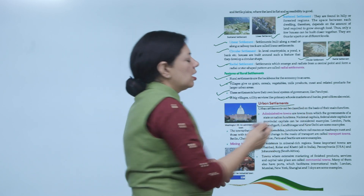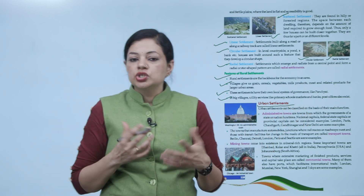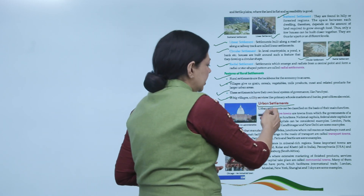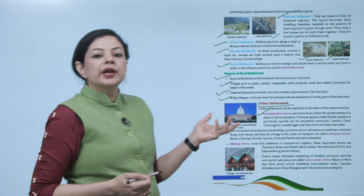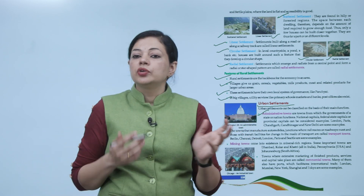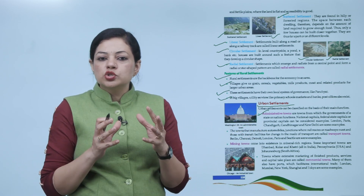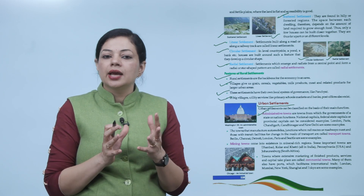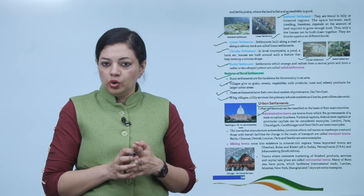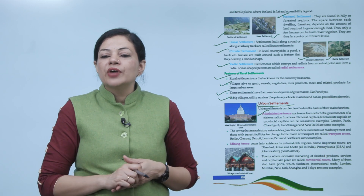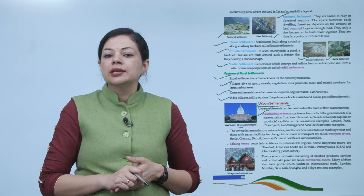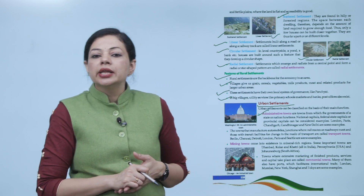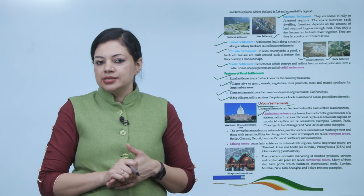The next type of settlement is urban settlement, i.e., cities. The first type is administrative towns — where the government of a state or nation functions. National capitals, federal, state, or provincial capitals can be considered administrative towns. Examples include London, Paris, Chandigarh, Gandhinagar, and New Delhi.